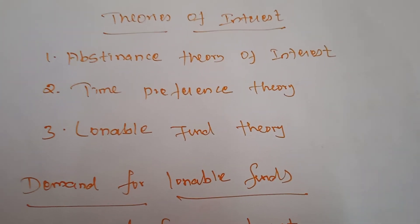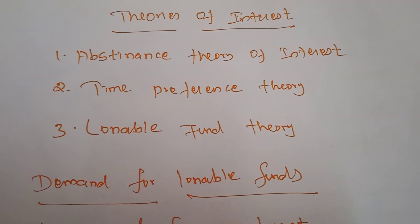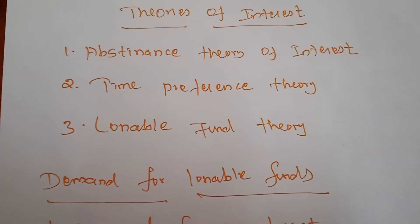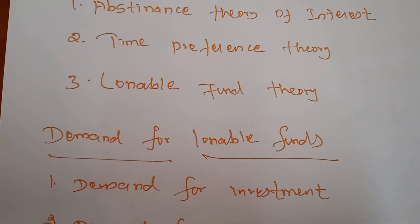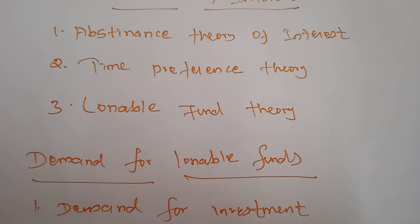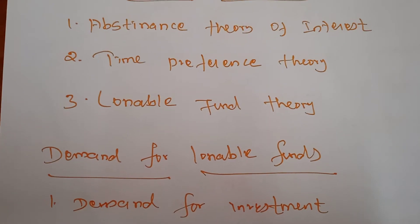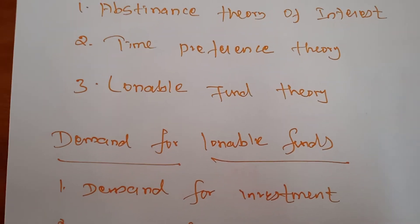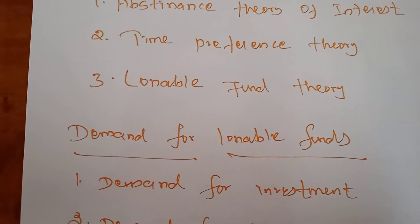If you are saving more than your present consumption, you are sacrificing your present consumption — you are the sacrificer, and you must get the reward. That reward only is considered as interest. Marshall accepted the abstinence theory of interest, but he used the word 'waiting' instead of 'abstinence.' Because if you want to get more capital, we have to take abstinence and we have to be waiting. Saving implies waiting. According to him, interest is the reward for the waiting, and saving involves waiting.